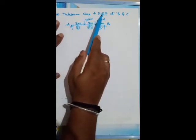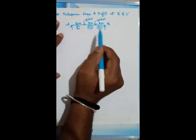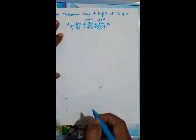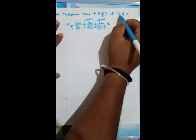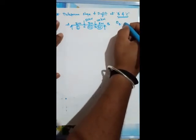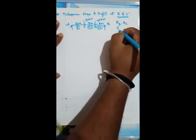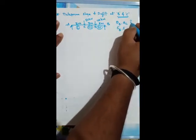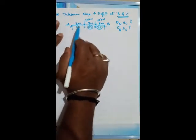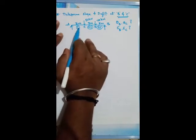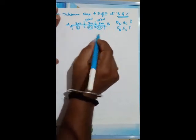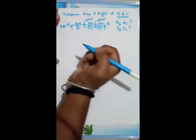The second problem: determine slope and deflection at points B and C. Points are A, B, C, and D. They have asked for theta B, theta C, delta B, and delta C. The beam is simply supported and subjected to two point loads with varying moment of inertia — A to C it is I, C to D it is 2I, D to B it is 3I.